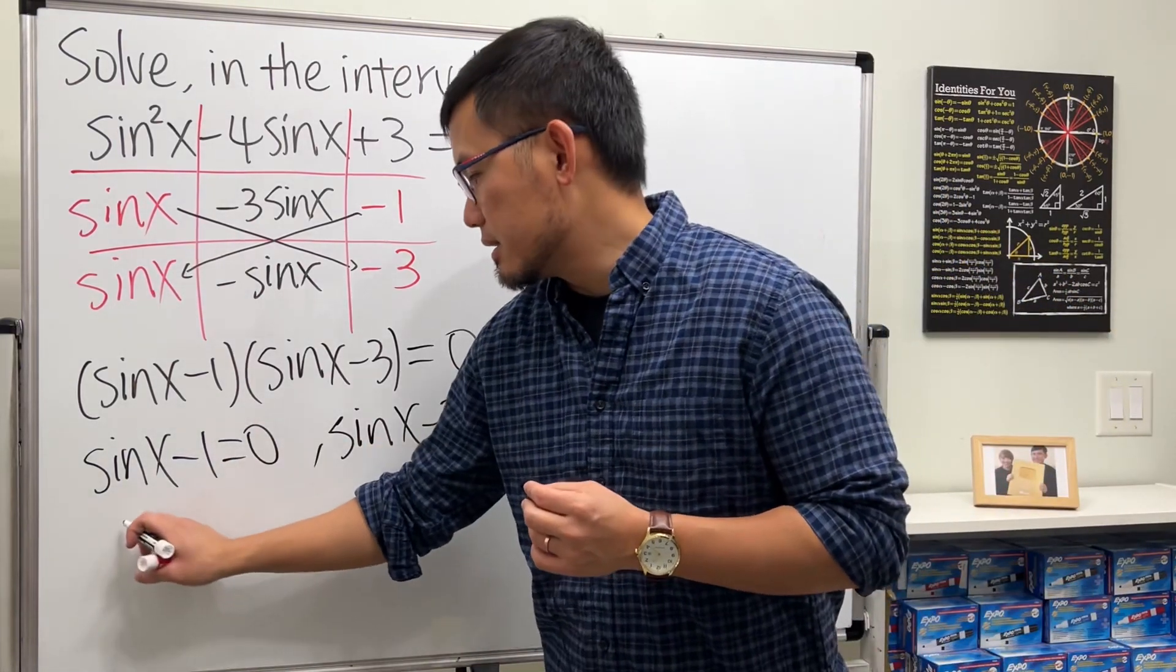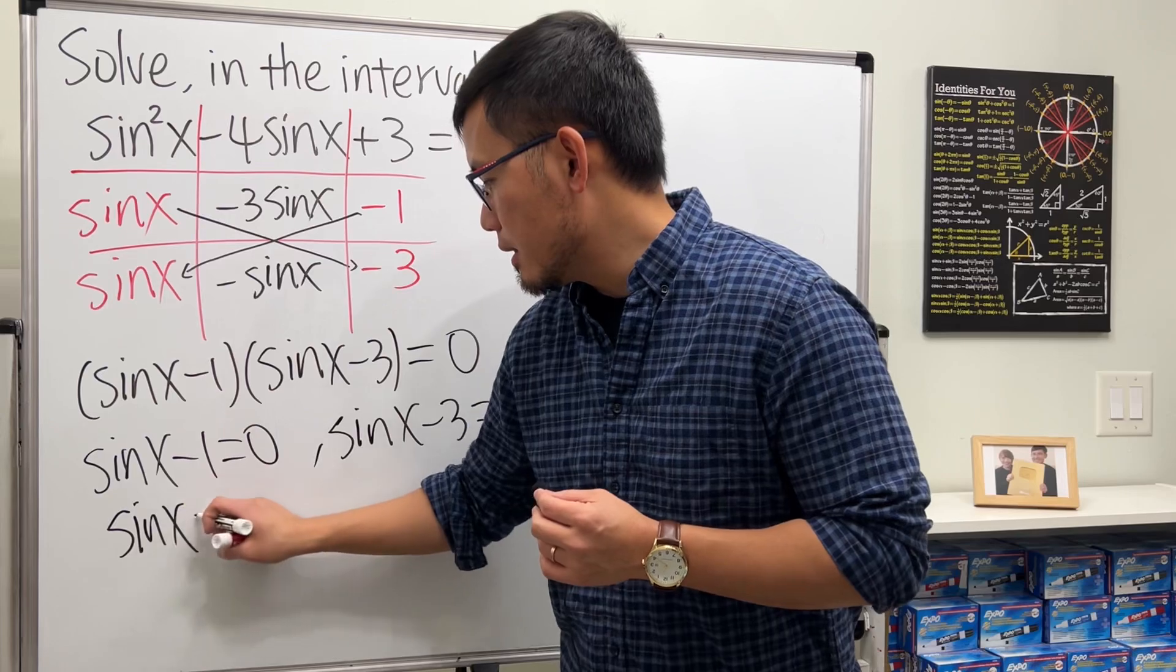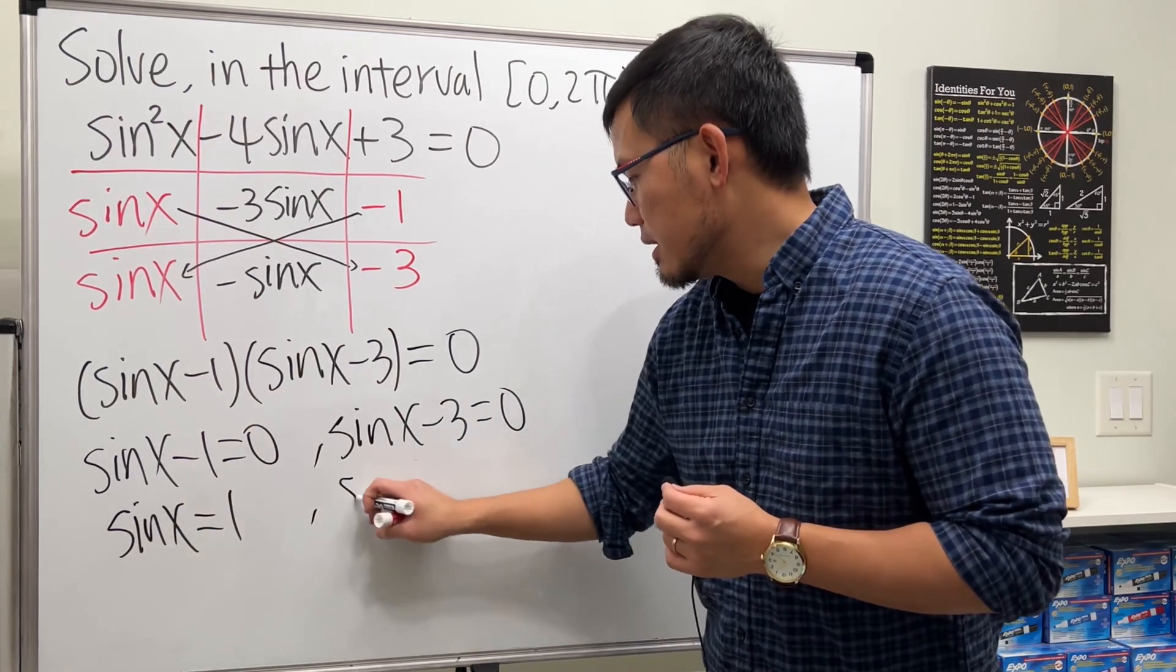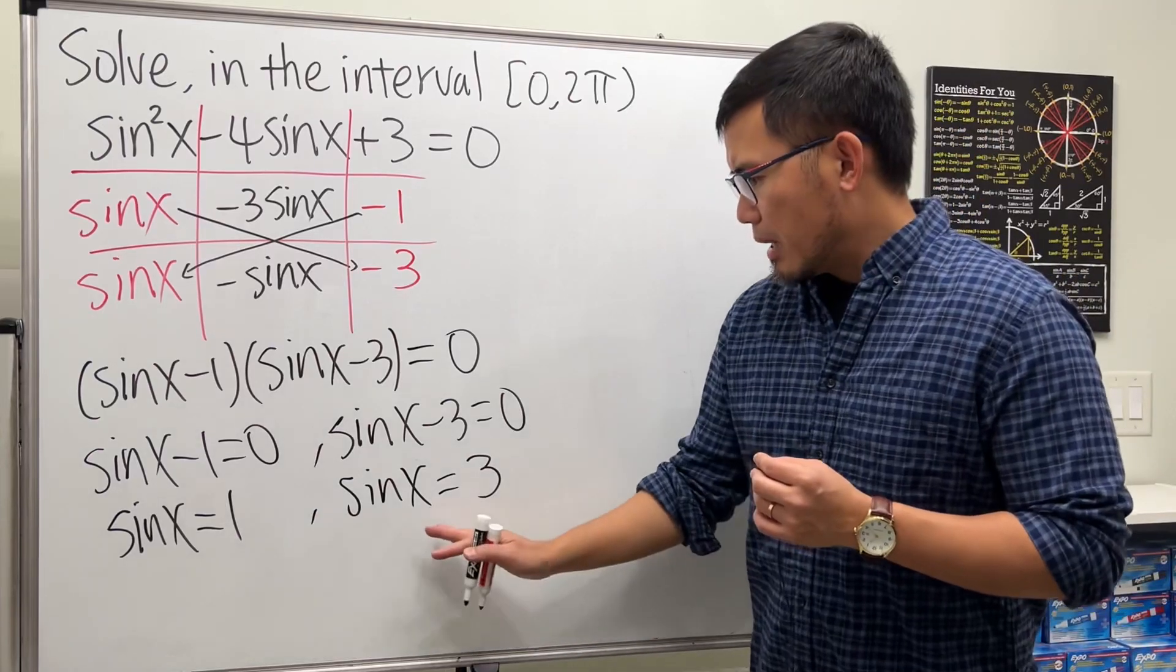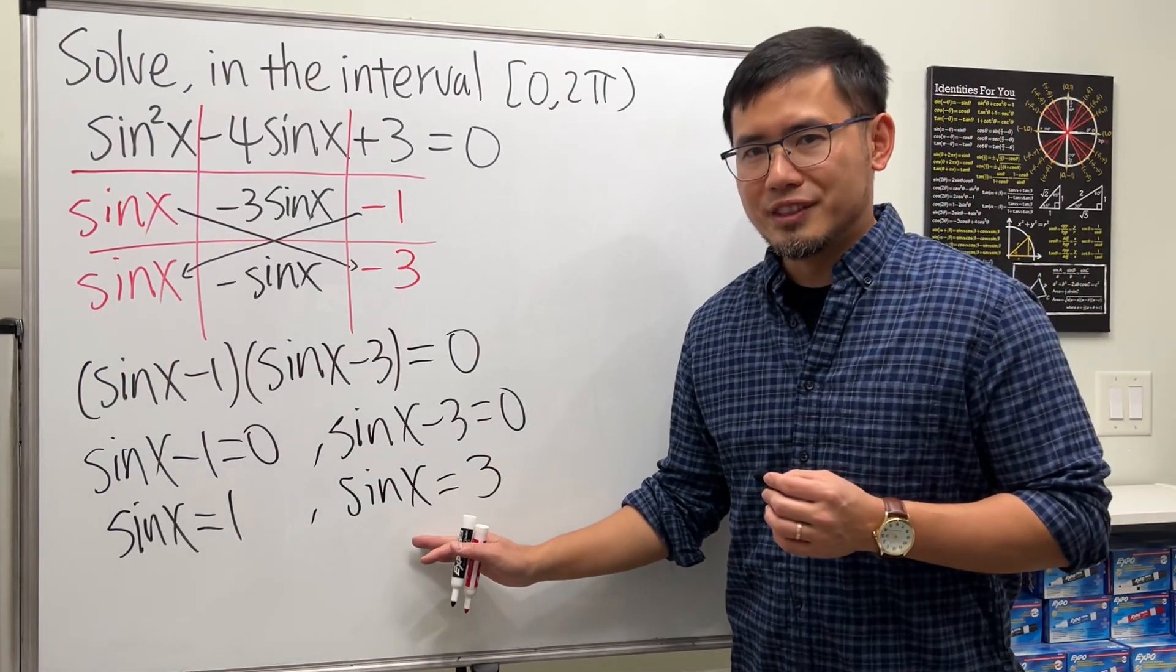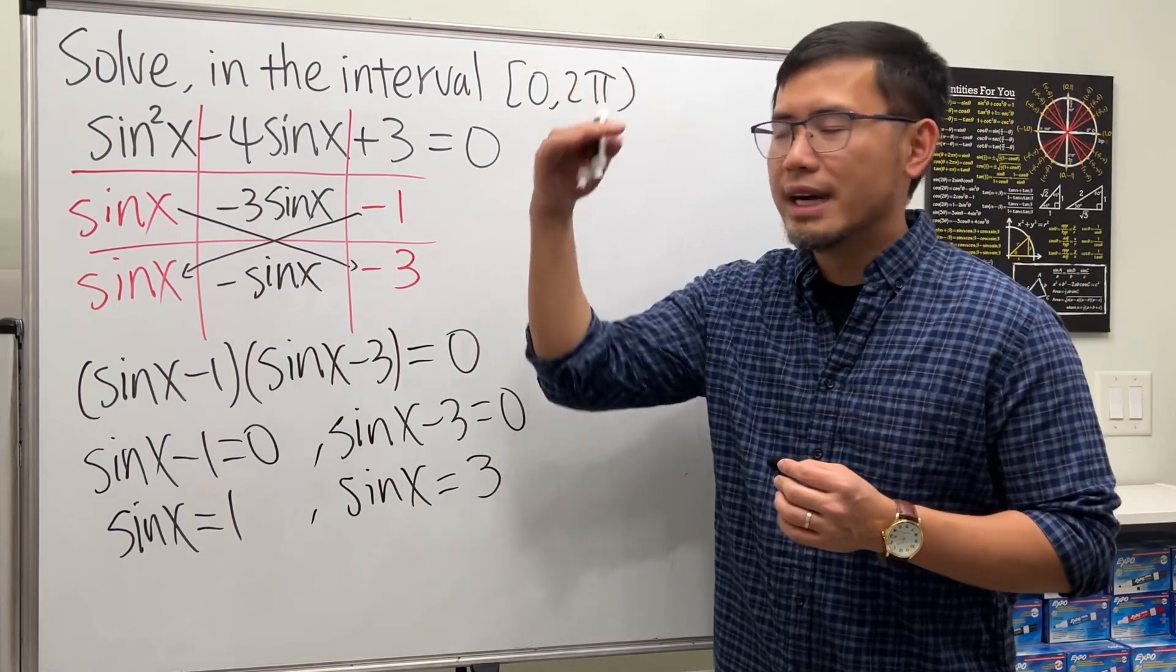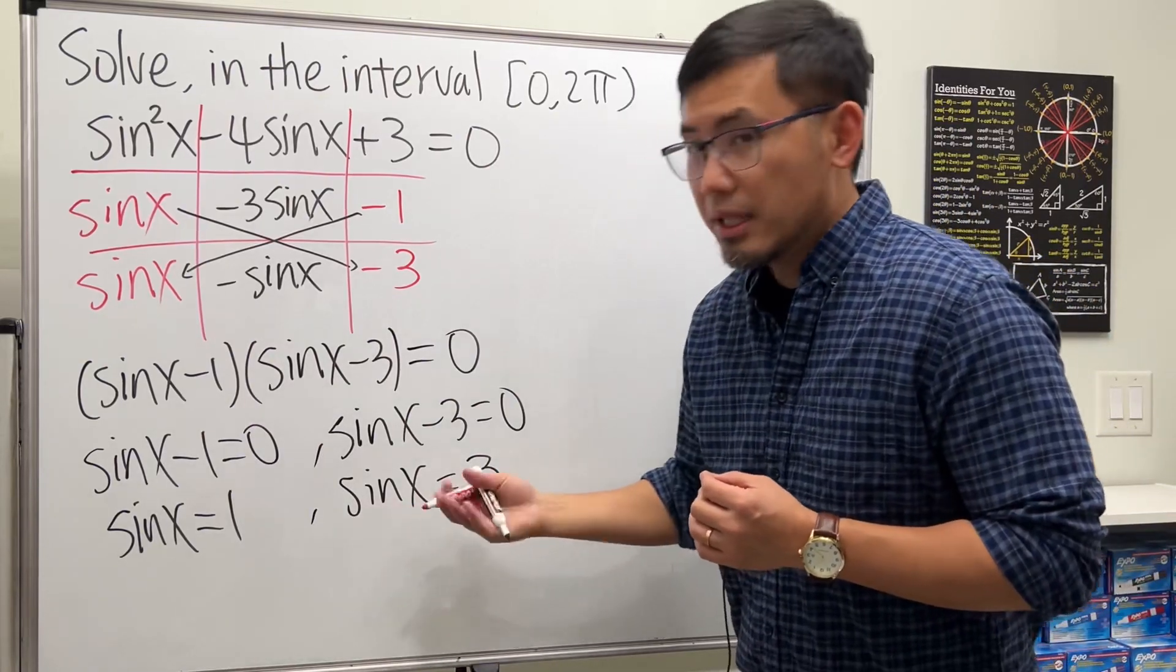This gives us sine x equals 1, and this right here gives us sine x equals 3. But what's the maximum value of sine? It's just at 1, right?